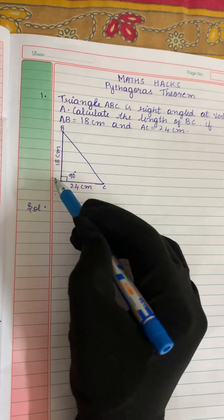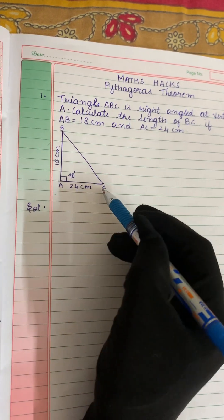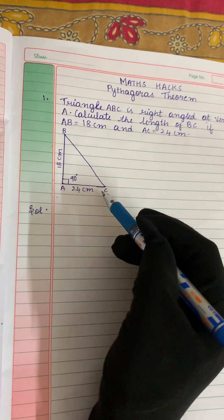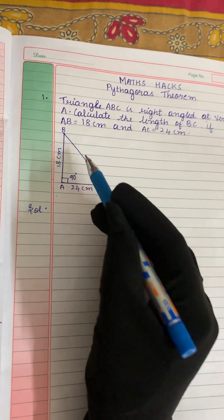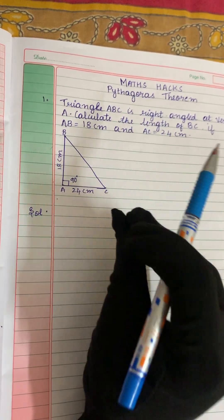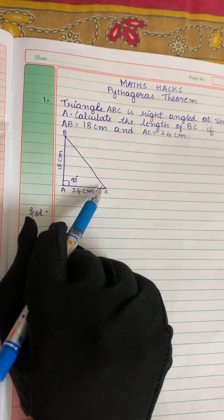AB is a perpendicular. What is BC? BC is hypotenuse. Why is it hypotenuse? Because the longest side of a right angled triangle is called hypotenuse.